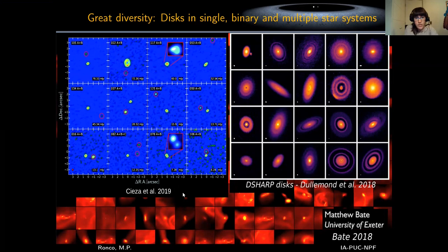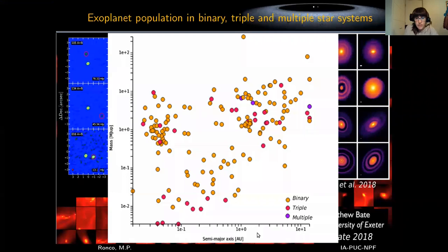However, by now there are several surveys discovering disks around binary and even higher-multiplicity star systems, like the ones shown here — this is a plot from GSA in 2019 from the ODISEA survey. This is of particular importance because, although still small, the exoplanet population orbiting binary, triple, or even multiple star systems is continuously growing. We now know more than 150 exoplanets in these kinds of environments, and we really need to understand how these planets form.